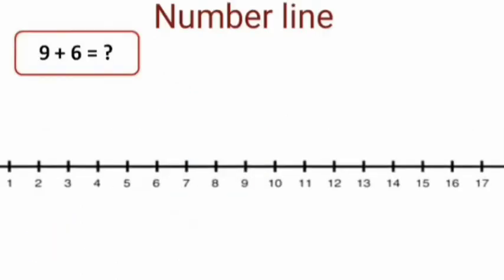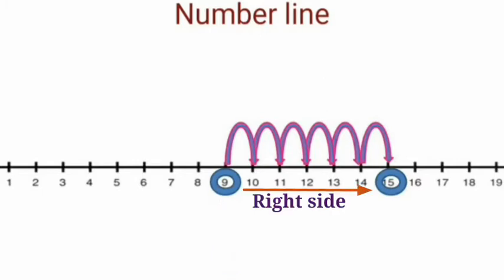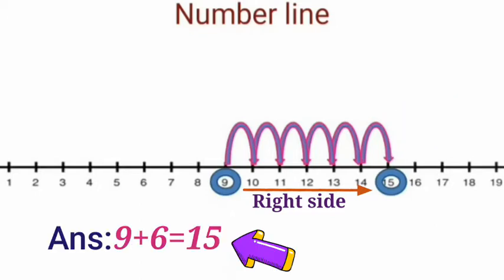Next, see the number line. 9 plus 6 is equal to — what is the answer? Start at 9, jump to 6, move on the right side. 15. So the answer is, 9 plus 6 is equal to 15.